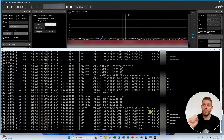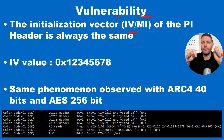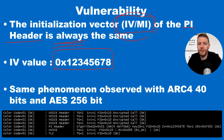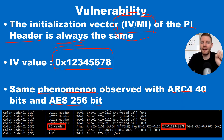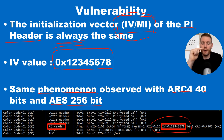This is the end of the demonstration, I go back to the PowerPoint. As we observed with DSD in the demonstration, the initialization vector — IV or MI (MI is the message indicator used in P25) — the IV/MI of the PI header is always the same. This is the value 0x12345678. We observe the same phenomenon with ARC4 40-bit and AES 256-bit. This is always the same number when you start a voice conversation by pressing the push-to-talk button. The first IV is always, always the same.